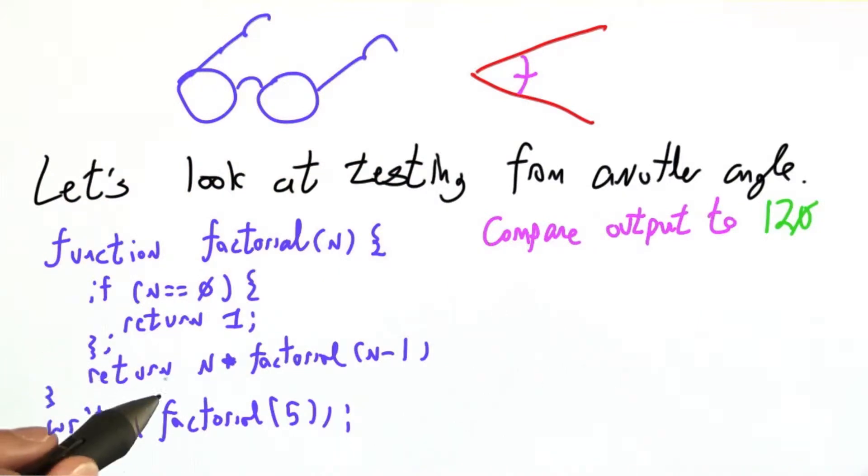And by thinking hard about the problem, we know the answer we should get is 120. 5 times 4 times 3 times 2 times 1, 5 factorial.